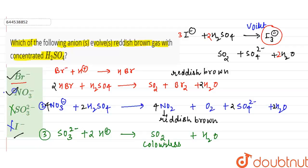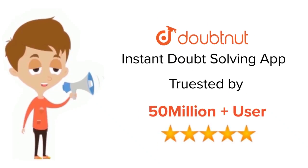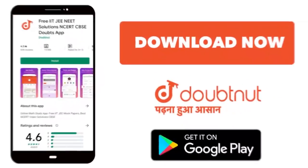Only correct options are Br minus and NO3 minus ion. Thank you. For class 6 to 12, IIT-JEE and NEET level, trusted by more than 5 crore students. Download Doubtnet app today.